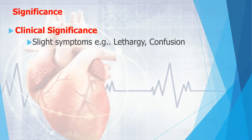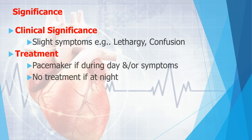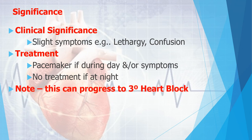Clinical features include slight symptoms such as lethargy or confusion. Treatment for Mobitz type 1 is a pacemaker if the patient is symptomatic; no treatment is required if asymptomatic. Note that this condition can progress to third degree heart block.